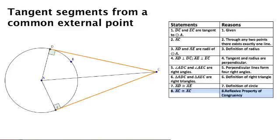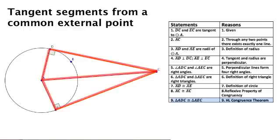And since we know that the pair of the legs are congruent, and we know that the hypotenuses are congruent, then we can use the hypotenuse leg theorem to prove that these two triangles are congruent.